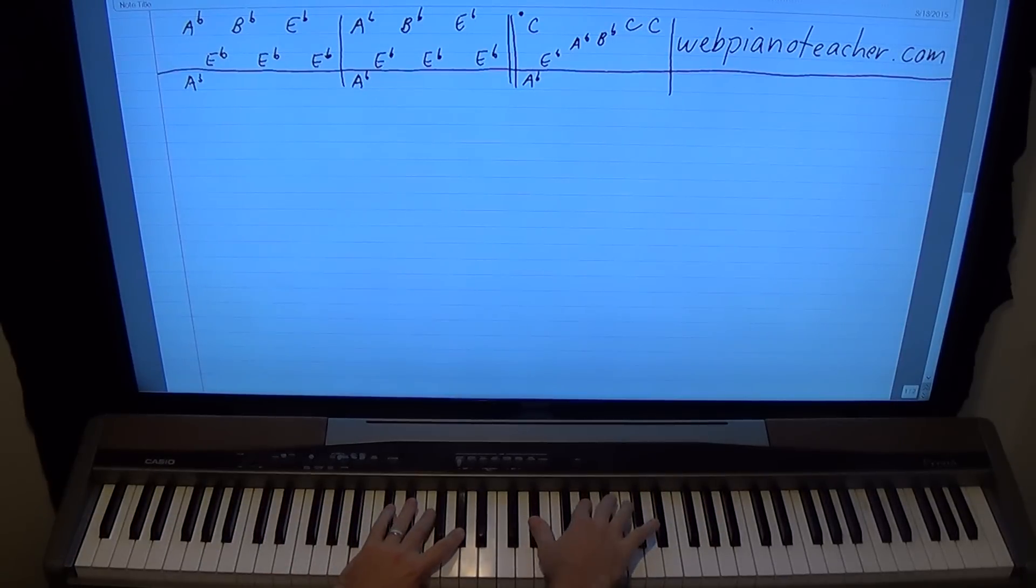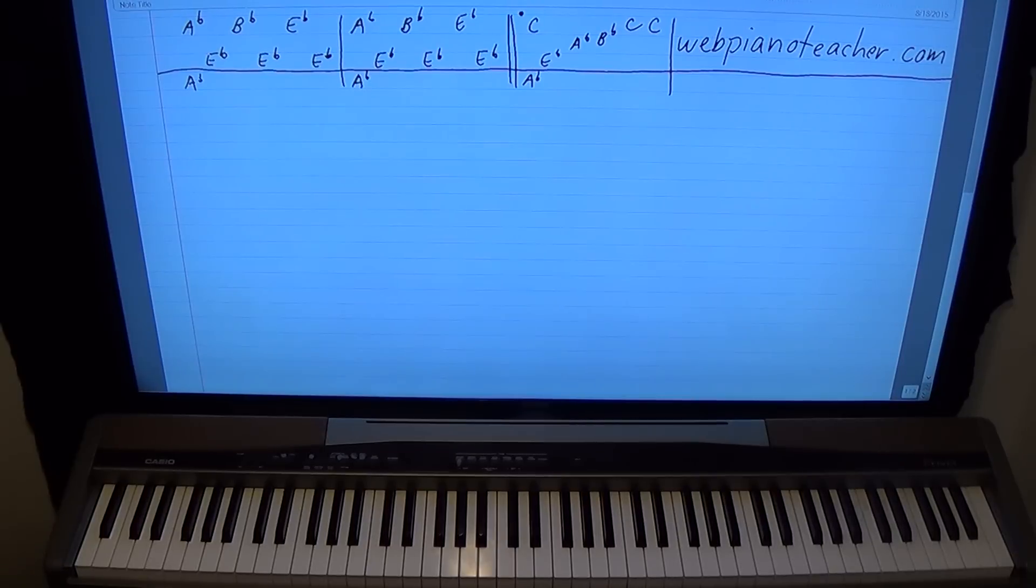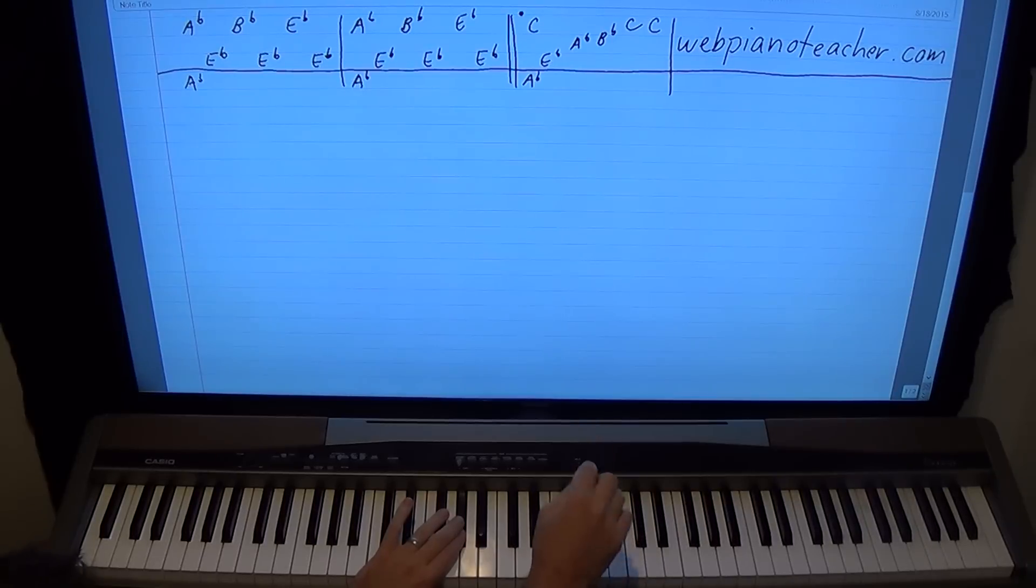Here's the intro we'll do. We're going to start on the left hand with an A flat right below middle C. The right hand will do an A flat above middle C with a two, down to E flat with a one.